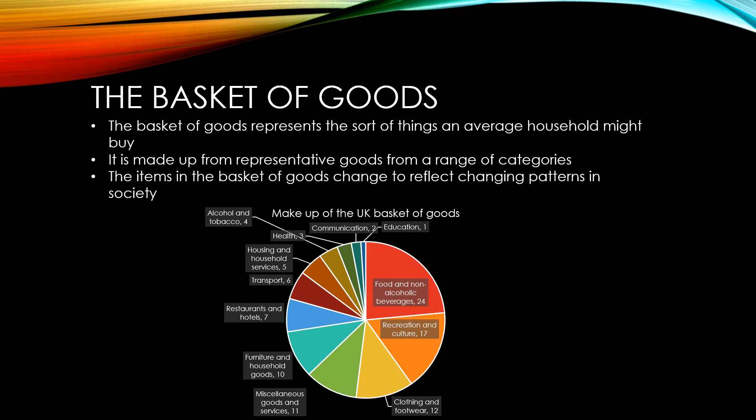Importantly, the items in the basket of goods change to reflect changing patterns in society. In 2022, additions included meat-free sausages, canned pulses, sports bras, pet collars, and antibacterial surface wipes, while removals included donuts, men's suits, and coal.